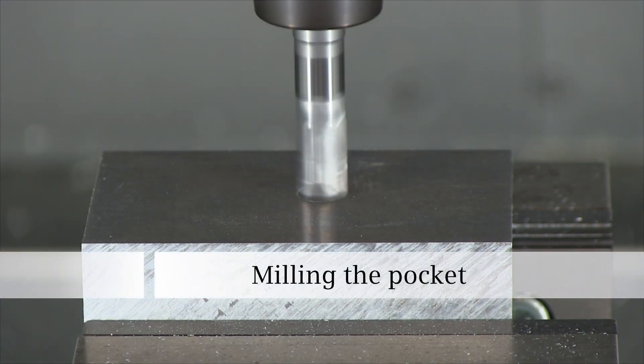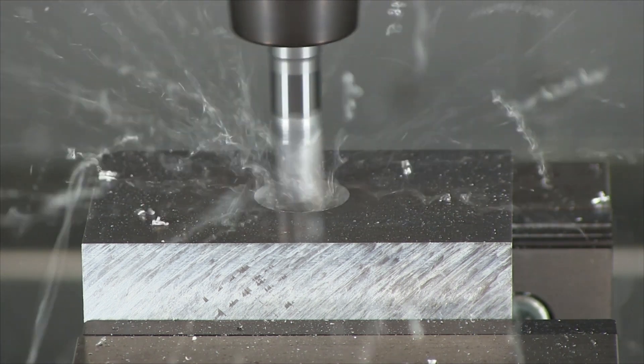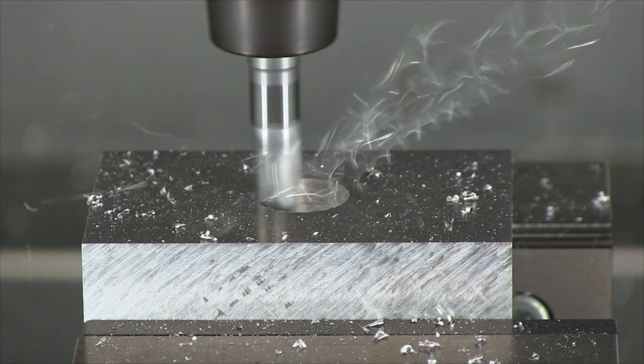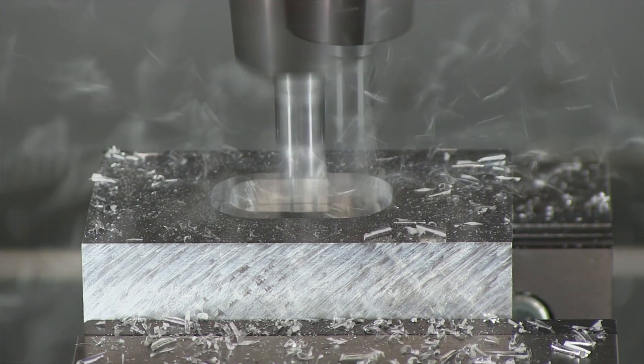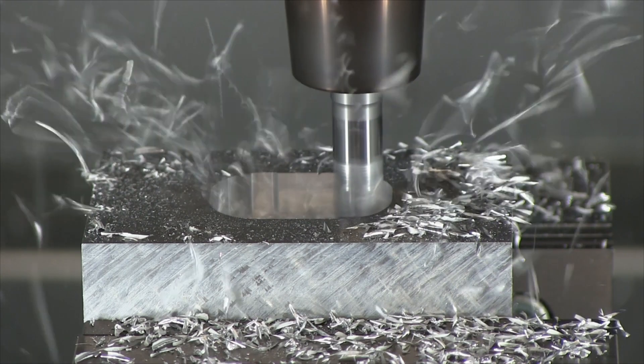One pocket is milled and then automatically measured. On the basis of this measurement, the machining operation can, for example, be terminated, or the pocket can be reworked using offset values.